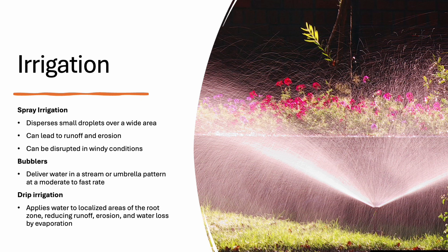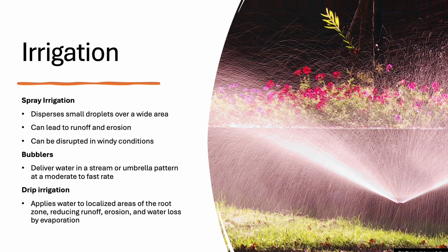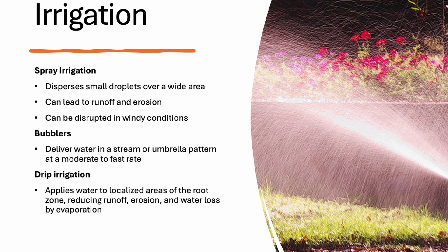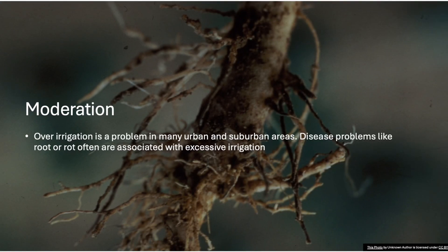There are a couple of different irrigation methods. Spray irrigation covers a large area but can lead to runoff and erosion. Bubblers deliver water in streams or umbrella patterns. Drip irrigation targets localized areas, reducing evaporation and runoff. You don't want to over-irrigate — over-irrigation is common in urban settings and can lead to issues like root rot or collar rot. Monitoring the amount of water applied is critical to avoid these diseases.